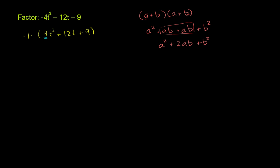Does 4t² + 12t + 9 fit this pattern? If 4t² is a², so if this right here is a², if that is a² right there, then what does a have to be? If this is a², then a would be equal to the square root of this. It would be 2t.